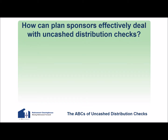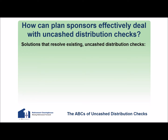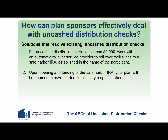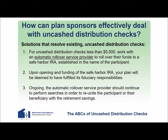How can plan sponsors effectively deal with uncashed distribution checks? For uncashed distribution checks less than $5,000, work with an automatic rollover service provider to roll over these funds to a Safe Harbor IRA established in the name of the participant. Upon opening and funding of the Safe Harbor IRA, your plan will be deemed to have fulfilled its fiduciary responsibilities. Ongoing, the automatic rollover service provider should continue to perform searches in order to reunite the participant or their beneficiary with the retirement savings.